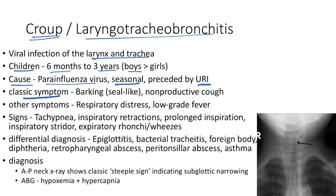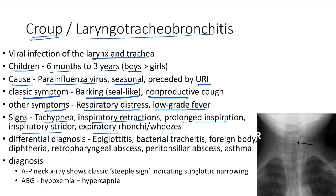The classic symptom in croup is a barking cough, which is seal-like and non-productive. Other symptoms include respiratory distress and low-grade fever. Signs include tachypnea, inspiratory retractions, prolonged inspiration, inspiratory stridor, and expiratory rhonchi or wheezes.